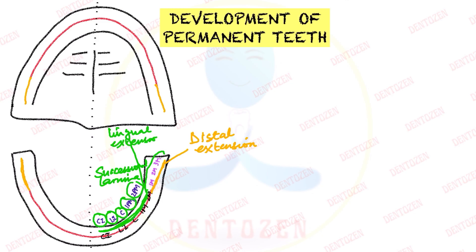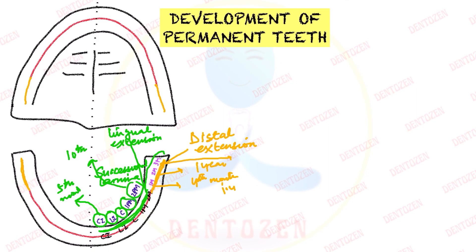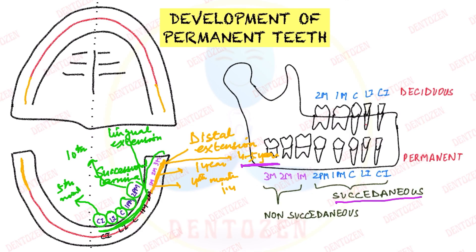Among the succedaneous teeth, the permanent central incisor starts to develop at the fifth month of intrauterine life, and development continues up to the second premolar, which starts at about the tenth month of age. For permanent molars, the first molar starts to develop by the fourth month of intrauterine life, the second molar at about one year after birth, and the third molar starts to develop by the fourth to fifth year of life. So the dental lamina has to be active until five years of age.